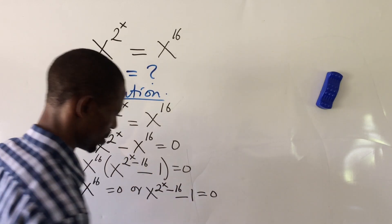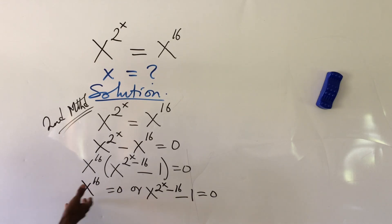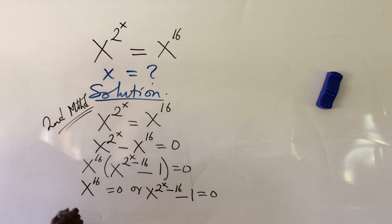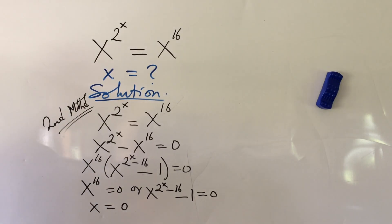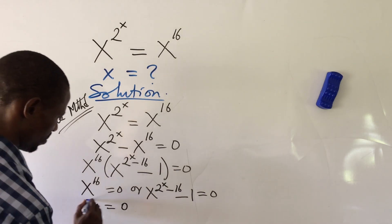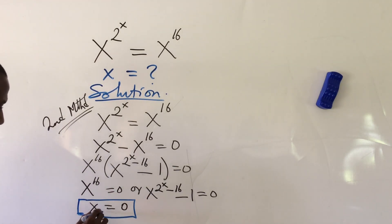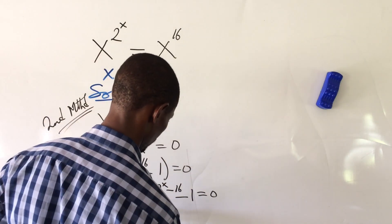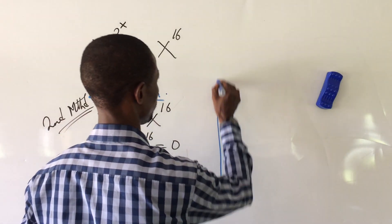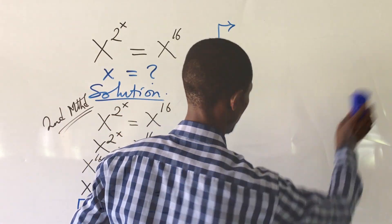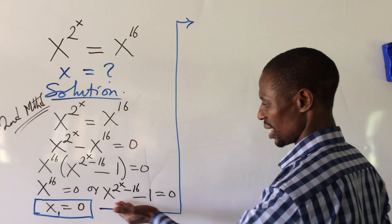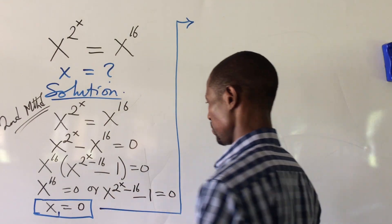From x to the power of 16 equal to zero, taking the 16th root of both sides gives us x equal to zero. So this is our first root, x₁ = 0.